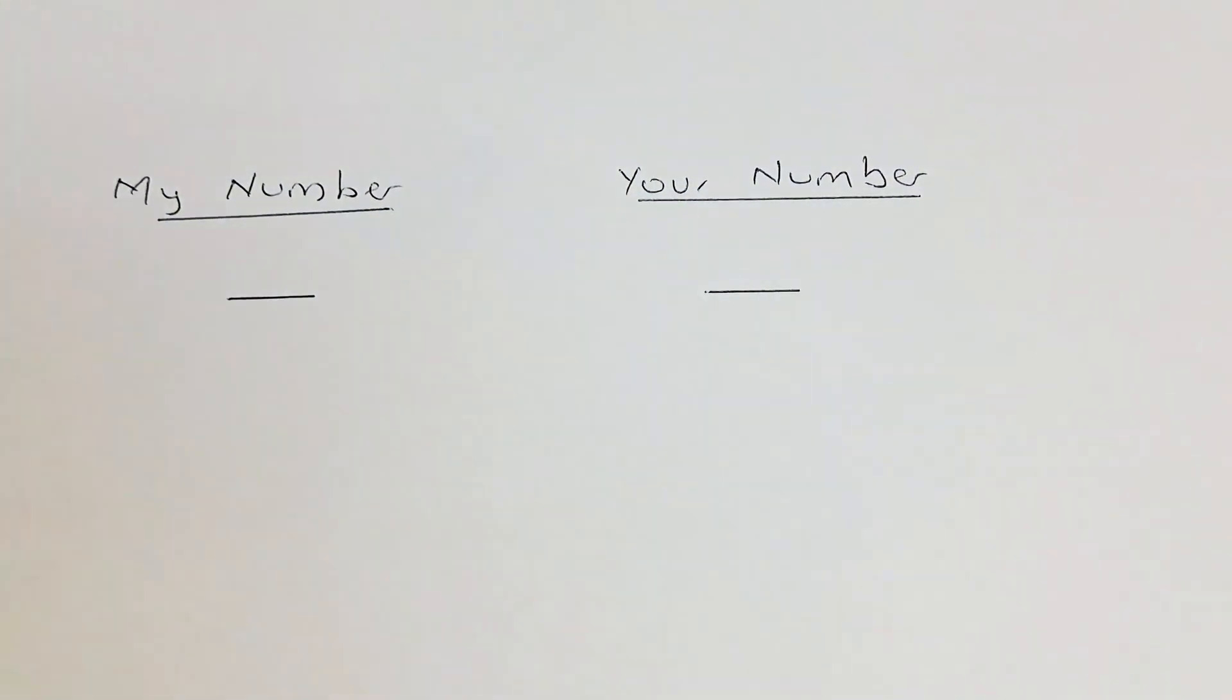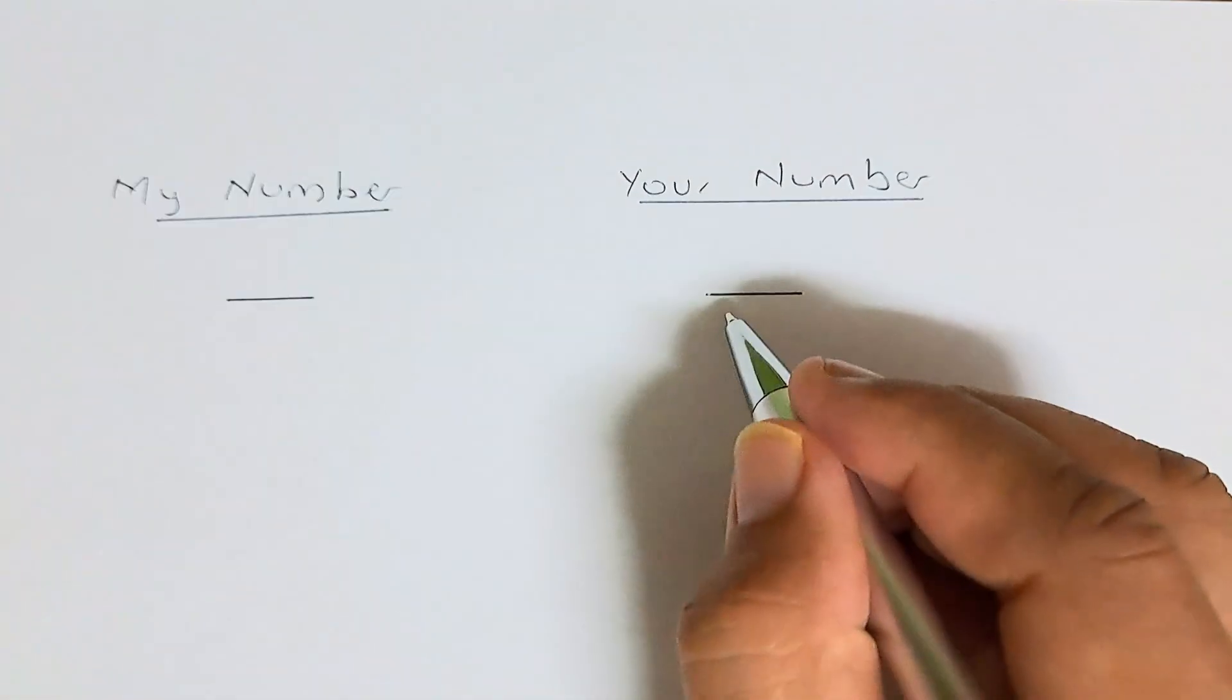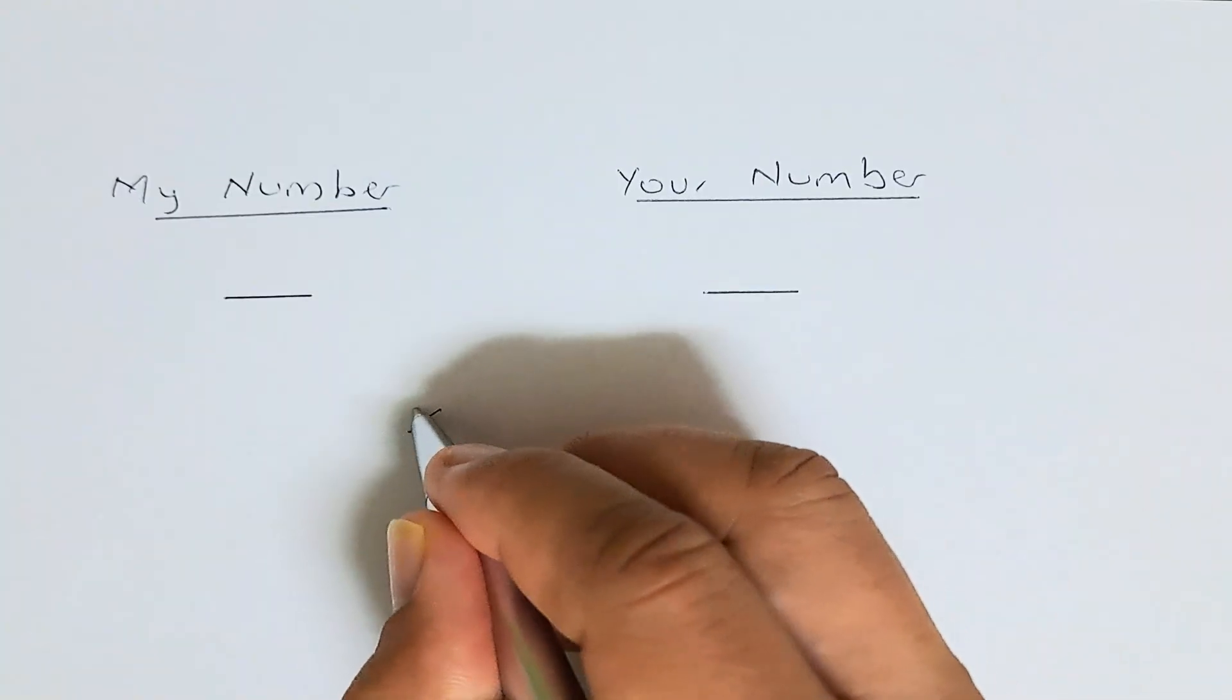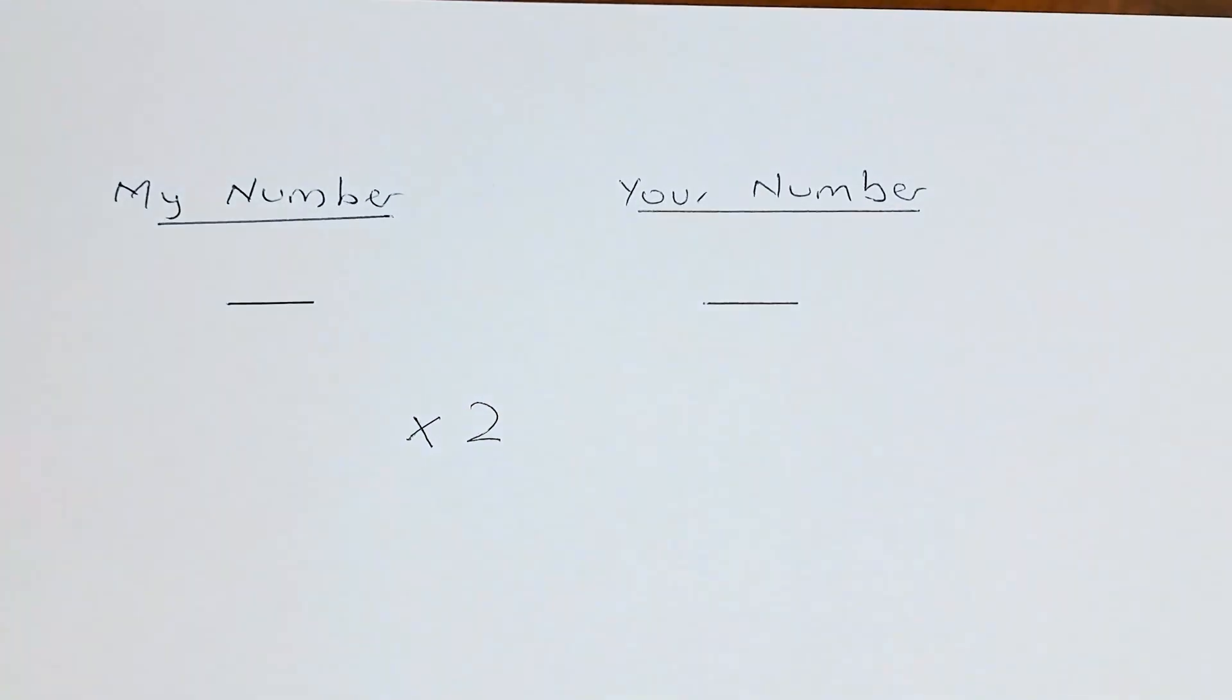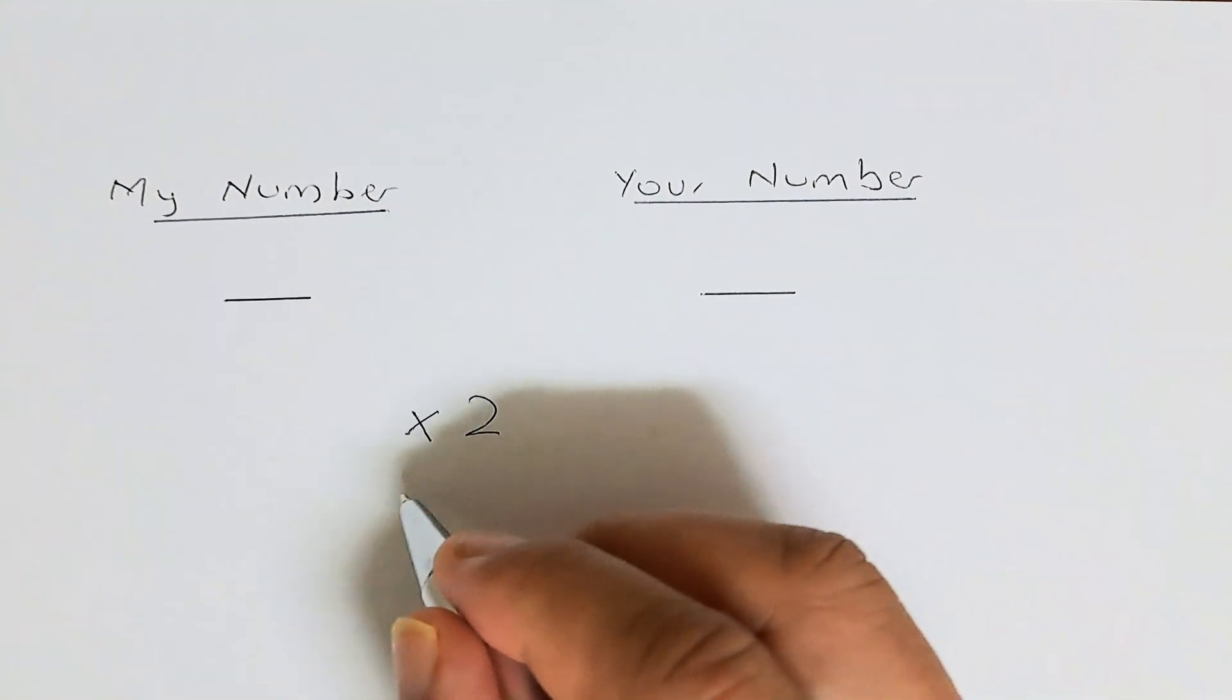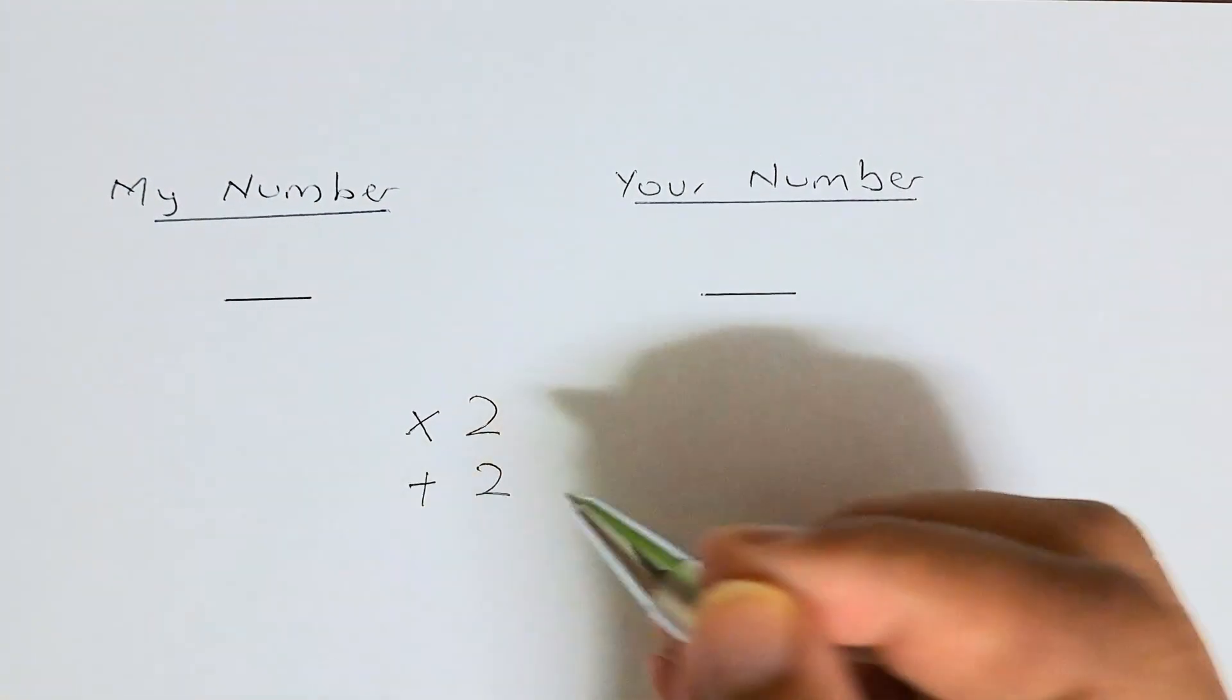Again, you are going to choose a number between 1 to 9, and I am going to choose my number. You have done it? Great. First, choose your number and multiply by 2. Then you are going to add 2 to the result.